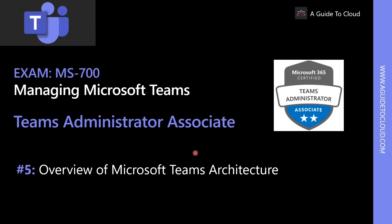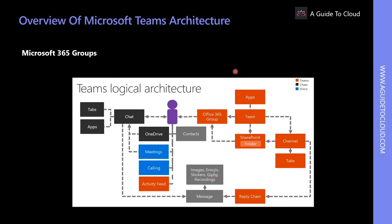Now that we understand how Teams integrates with the Power Platform, let's talk about Microsoft Teams architecture. Multiple Office 365 services have been combined to provide the unified communication and collaboration hub experience of Teams. We need to first understand the basics — Microsoft 365 Groups, formerly known as Office 365 Groups, is the cross-platform membership service in Office 365. Unlike traditional Active Directory Groups used for permission management, Microsoft 365 Groups are built for collaboration of teams.